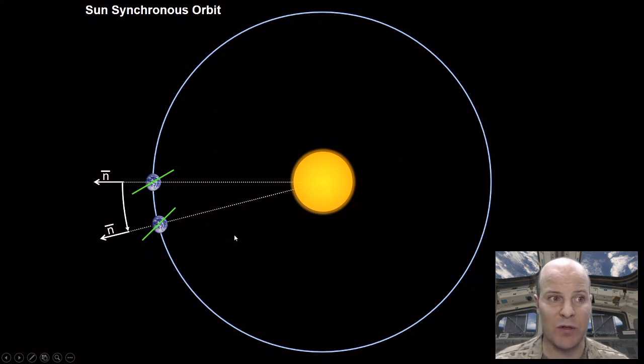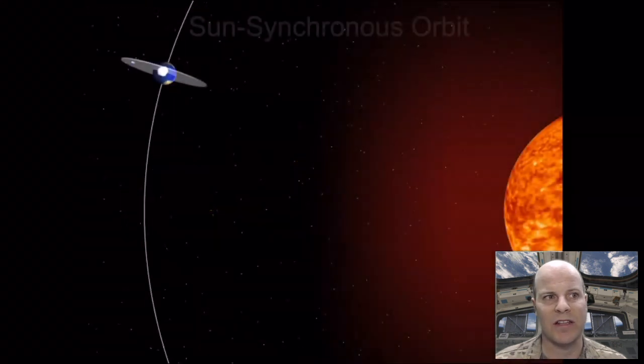But since we have that equatorial bulge and we can design our orbit appropriately, we can actually find an orbital inclination and altitude wherein we get that one degree per day shift approximately for free, if you want to think of it that way. So I'll show you an animation of what that looks like here on this next slide.